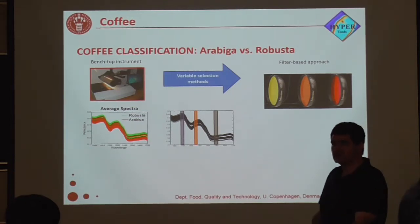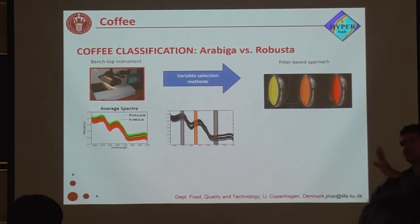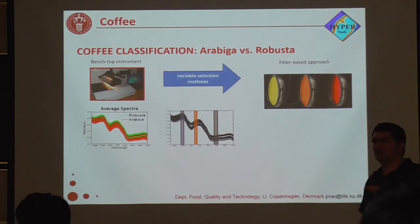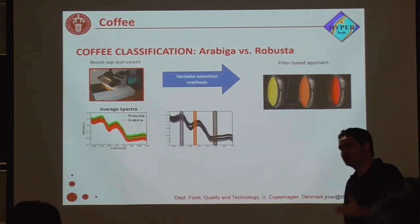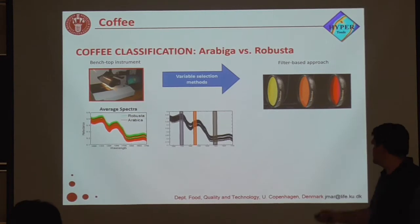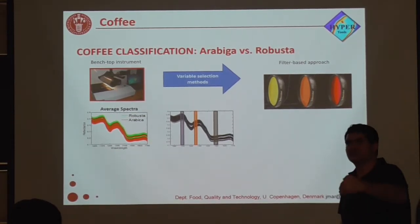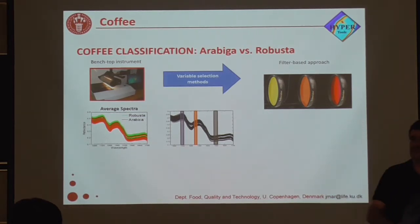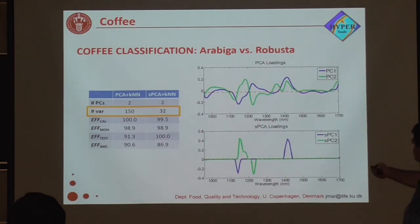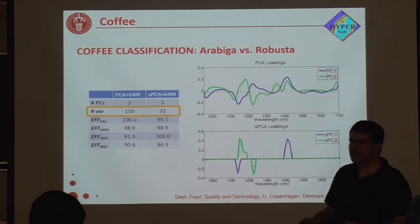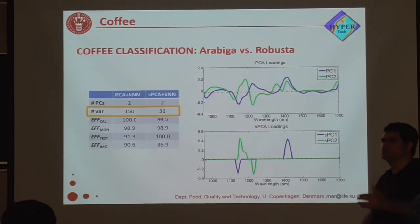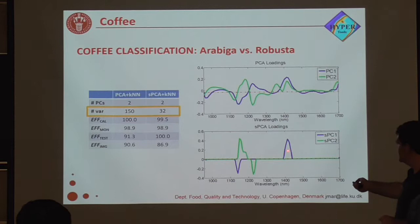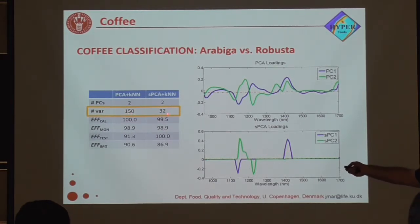The problem is that these cameras are a little bit expensive and hard to maintain. So there is another version — the filter-based configuration — where instead of measuring all wavelengths, we measure only the wavelengths that are really important for us, using filters instead of full spectral range detectors. We proposed to measure the coffee in our lab — this was done in Italy as a collaboration. We checked which wavelengths are the most important, and applied sparse PCA and sparse PLS, making zero the regression coefficients that are not useful for separation. We found that with 32 wavelengths we get the same information as 150 wavelengths.